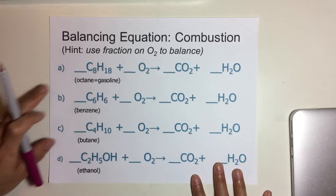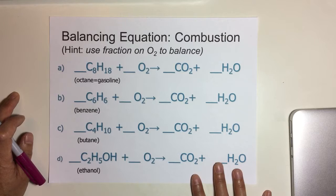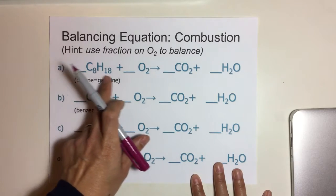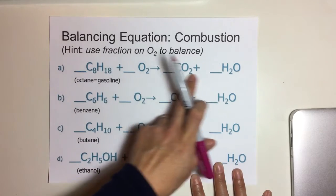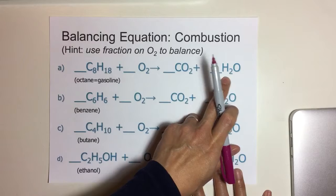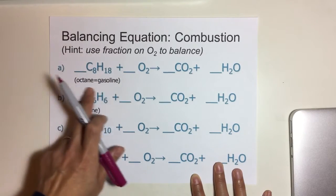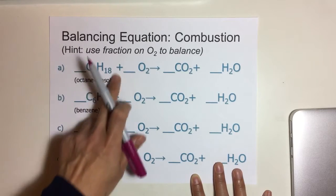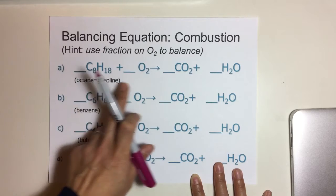When you balance combustion reactions using fractions, what you need to do is find the single element, or atoms of a given element—only one of that given element. In this compound, you see it's made up of carbon and hydrogen, so it's made up of two different elements.